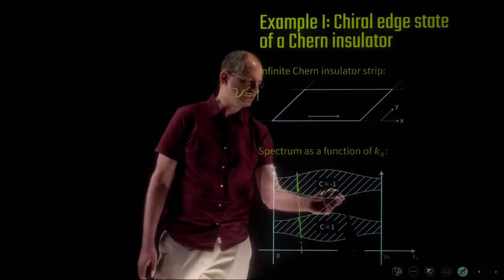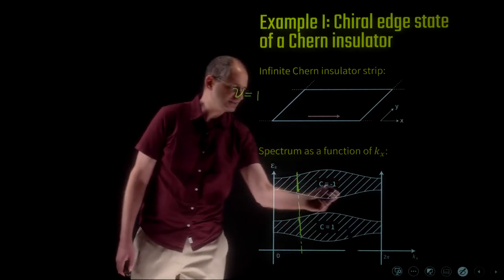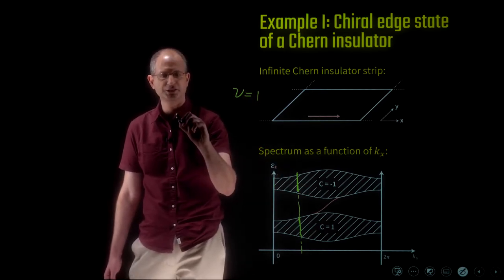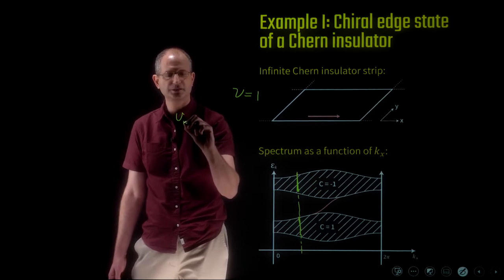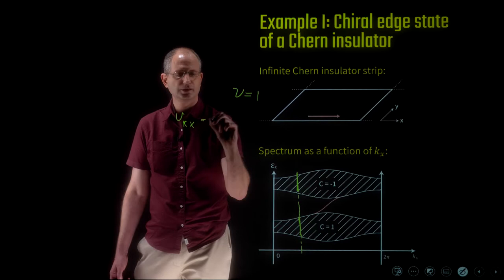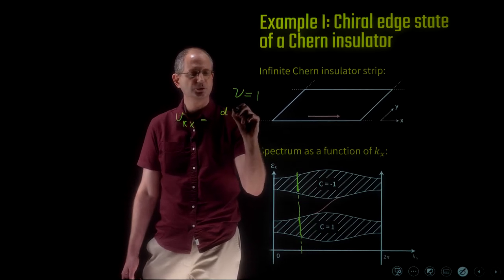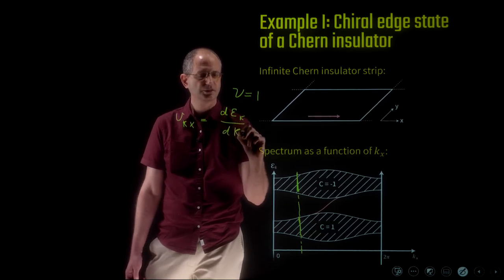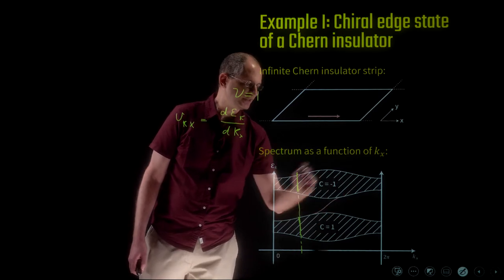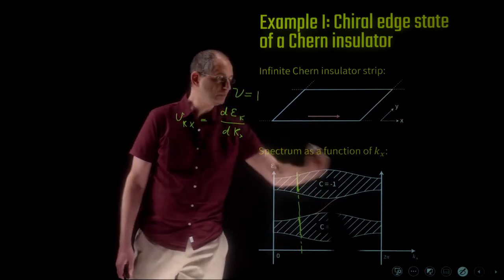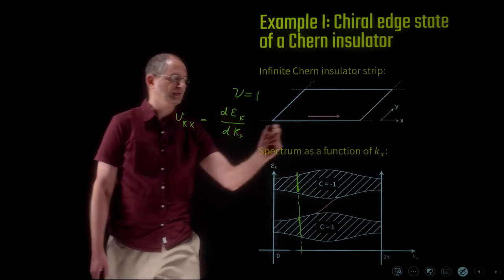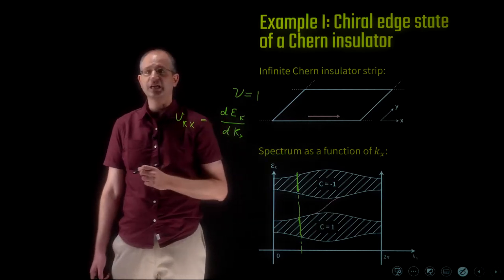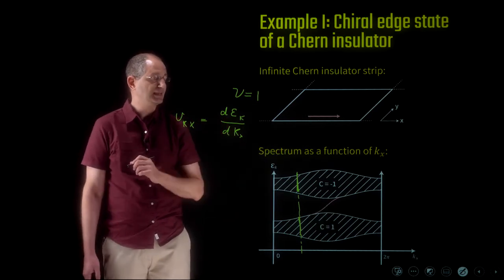This state is chiral because the slope of the spectrum as a function of kx corresponds to the group velocity: v(kx) = dE/dkx. The spectrum of the edge state has a positive slope, corresponding to a positive velocity. At this edge there is no corresponding state moving in the opposite direction — this is why we call it a chiral edge state.